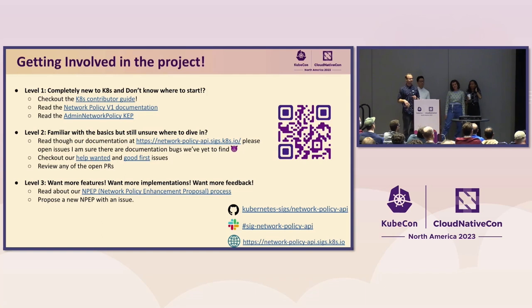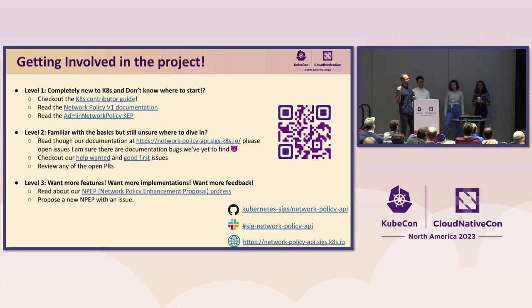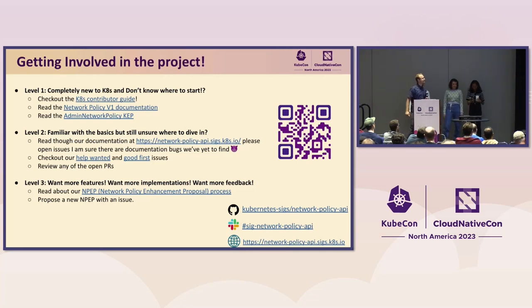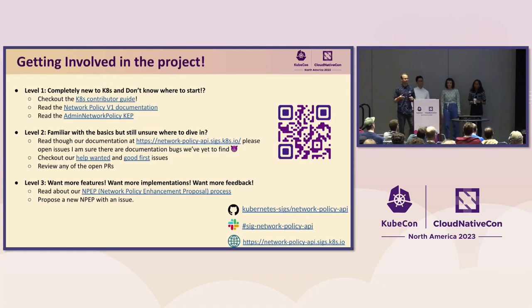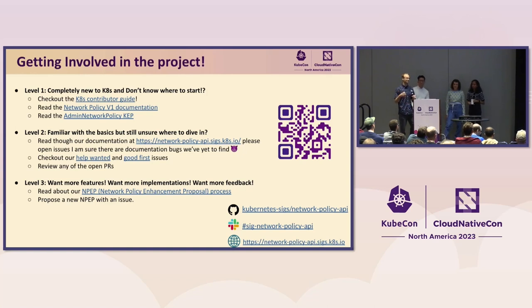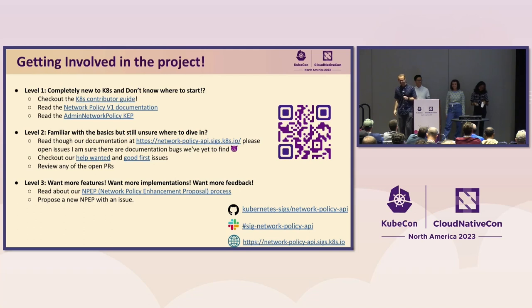For getting involved, there are a couple of different levels. You can start completely new at some of the generic Kubernetes documentation. You can also hop right into our documentation. And further, if you're a CNI that has a cluster-scope object and you're implementing a feature, we want to hear that. We want everyone to get involved and create new NPEPs — our version of a KEP, designed after the Gateway API's GEP. It's way less painful than a KEP, so it should be a more enjoyable process.